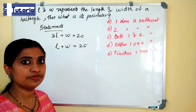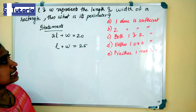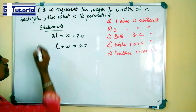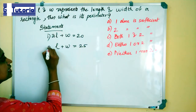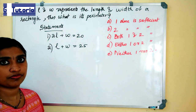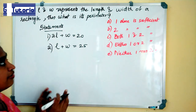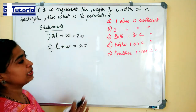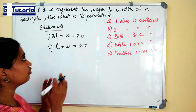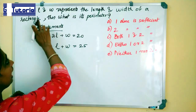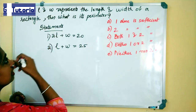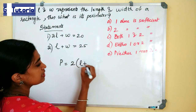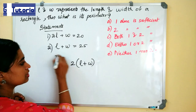This is the first question. If L and W represent the length and width of a rectangle, then what is its perimeter? The statements given are: first statement is 2L plus W is equal to 20, and the second statement is L plus W is equal to 25. First, we have to check whether it is a value question or yes or no question. Here we are asked to find the value of perimeter, so it is a value type question. The perimeter of a rectangle is given by the formula 2 into (L plus W).